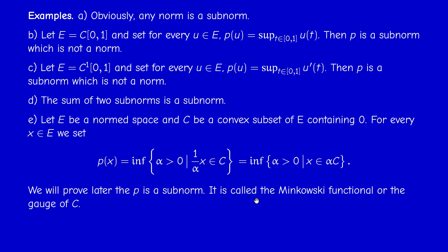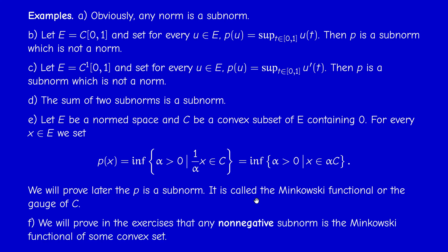We will prove in the exercises a kind of converse: any non-negative sub-norm is of this form for some convex set C containing the origin. By definition, the Minkowski functional is ≥ 0 since it is the infimum of positive numbers α. However, the earlier examples — P(u) = sup u(t) or P(u) = sup u′ — can take negative values, so they are not of this form. That is why non-negativity must be assumed to represent a sub-norm as a Minkowski functional of a convex set.